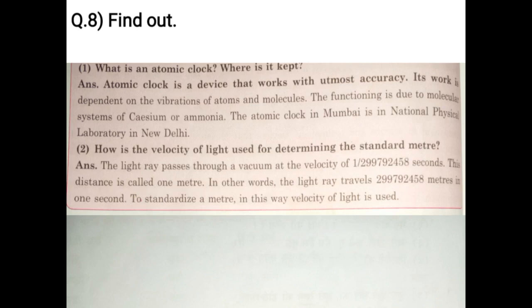How is the velocity of light used for determining the standard meter? The light ray passes through a vacuum at the velocity of 1 upon 29 crore 97,92,458 seconds. This distance is called 1 meter. In other words, the light ray travels 29 crore 97,92,458 meters in 1 second. To standardize the meter, in this way velocity of light is used.